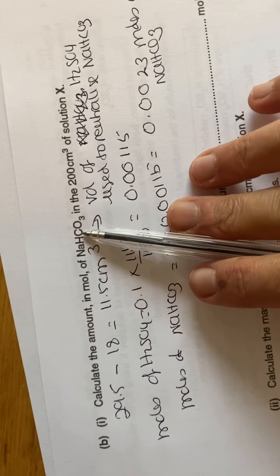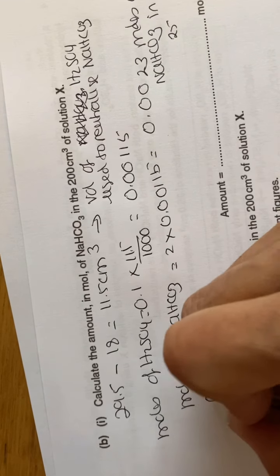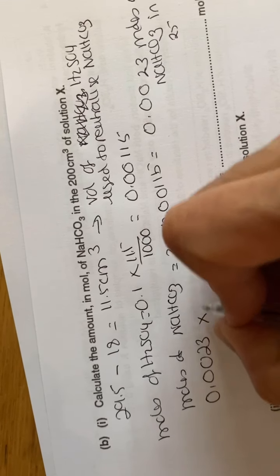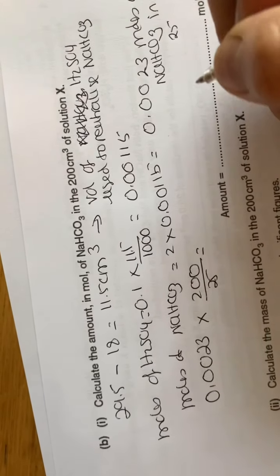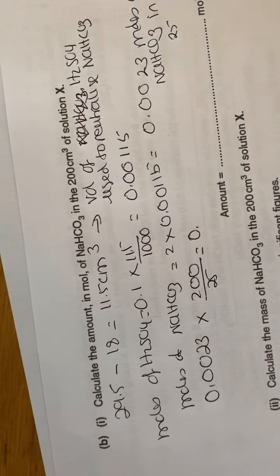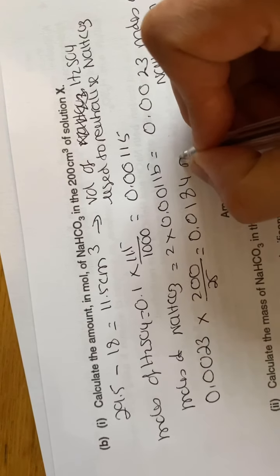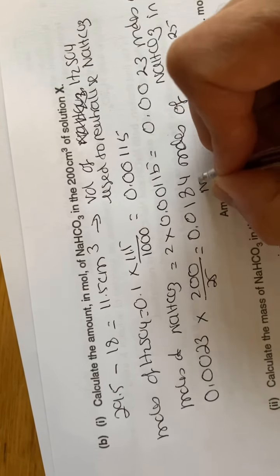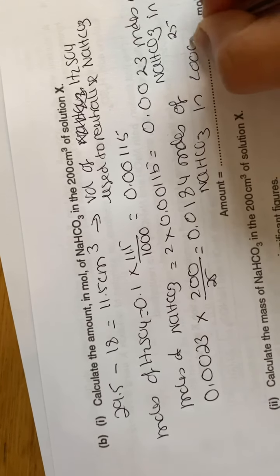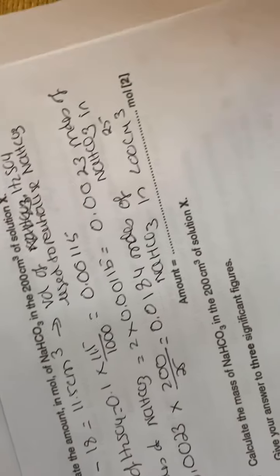That 0.0023 moles is in 25 cm³, but we need the amount in 200 cm³. So multiply: 0.0023 × 200 ÷ 25, which gives 0.00184 moles of sodium hydrogen carbonate in the 200 cm³ solution.